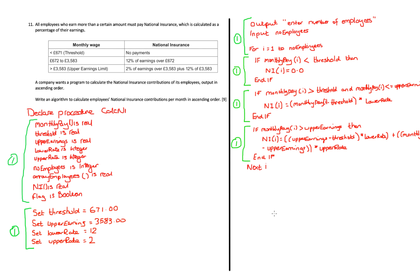The only task left is to sort the array into ascending order. Looking at the exam board mark scheme, there were a few mistakes, and it isn't made clear whether to sort the national insurance array or the monthly pay array — the question says output contributions in ascending order. I gave credit for either, as long as a standard bubble sort was used.